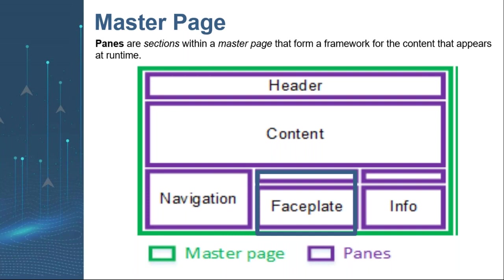The faceplate pane is a page associated with each piece of equipment — it contains a graphical representation of the equipment such as measurements and controls. Finally, the info zone or info pane contains the alarm list, trends, and interlocks. There are three types of interlocks: security interlocks, process interlocks, and permissive interlocks.